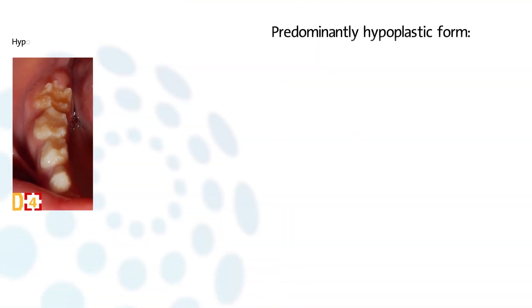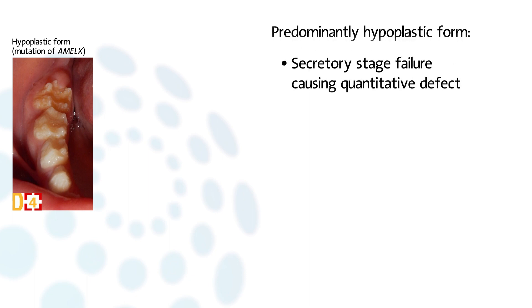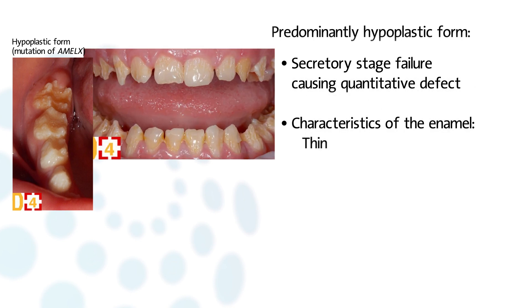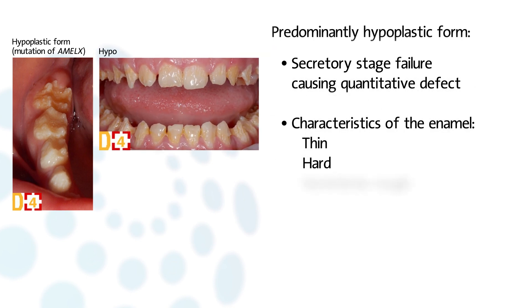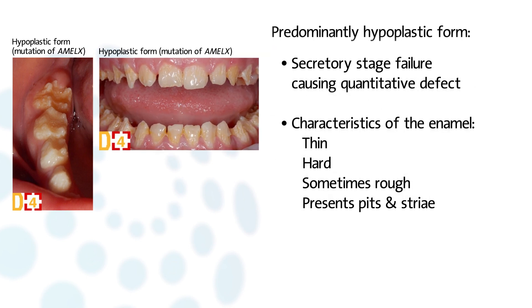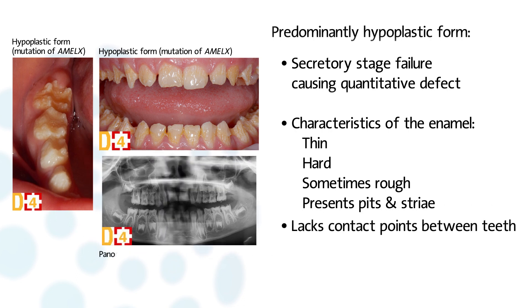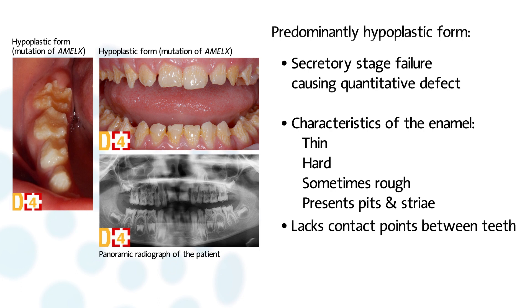The predominantly hypoplastic form is a quantitative defect resulting from failure during the secretory stage. The enamel is thin, hard, maybe rough, and presents pits and striae. There is often a lack of contact points between teeth. Radiographically, the enamel contrasts normally from dentine and the morphological anomalies are detectable on X-rays.